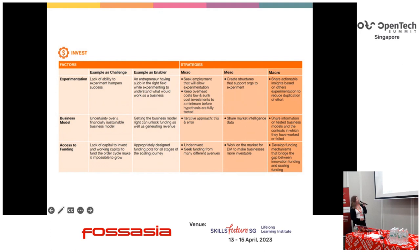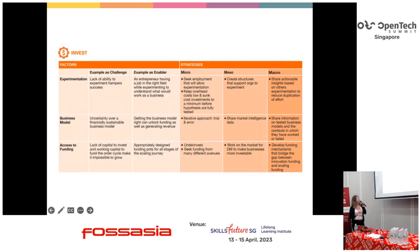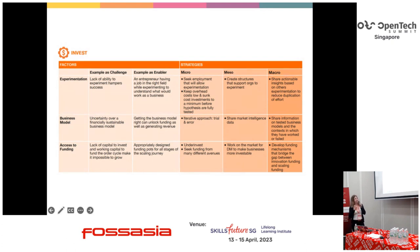Under Invest, we look at different business models. Uncertainties about business models are still something that make it really difficult for people to grow and scale their manufacturing efforts. At the same time, getting the right business model can unlock funding, start generating revenue, and help you become sustainable. What we're recommending is an alternative approach that includes trials and errors. On the top-down level, we recommend sharing information globally on different tested business models openly, and especially sharing the context in which they have worked or failed, so people can learn from those.